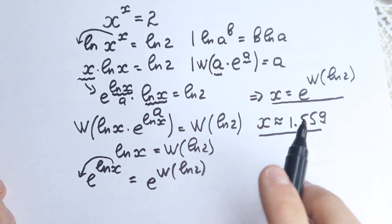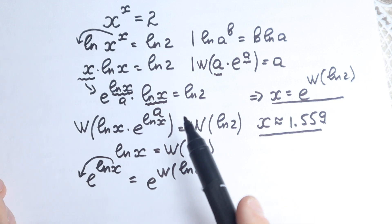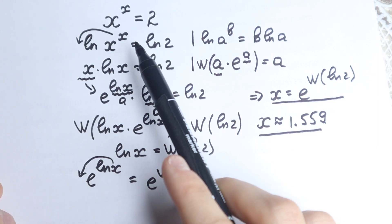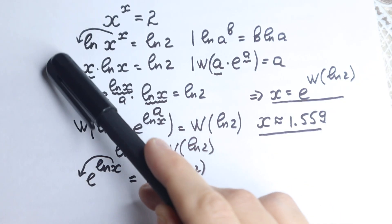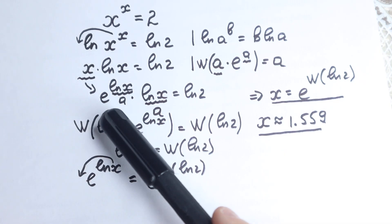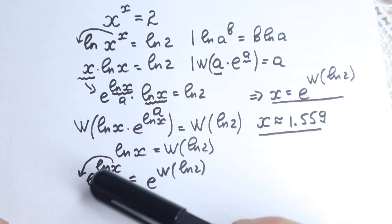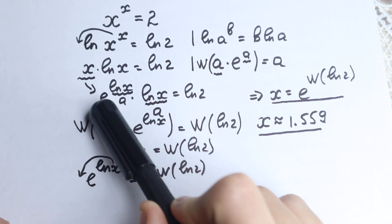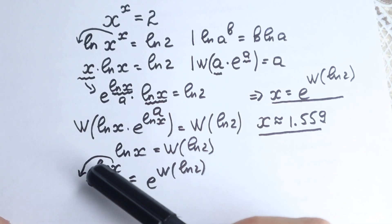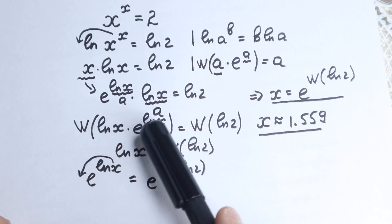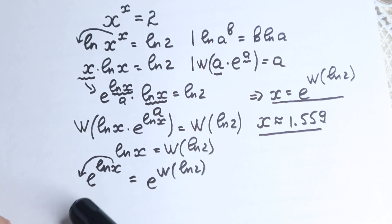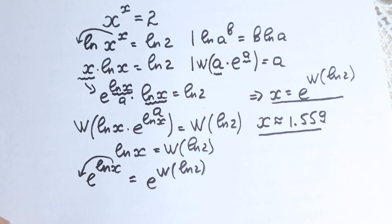Let's recap quickly. First, apply the natural log to bring x down as a coefficient. Second, use the Lambert W function — create e in the expression by writing x as e^(ln x), apply the Lambert W to get ln(x) = W(ln 2), then raise e to both sides and x jumps out. I hope you understand this explanation and enjoyed this video. Thank you for your time, have a great day, and write any questions in the comment section — see you in the next videos!